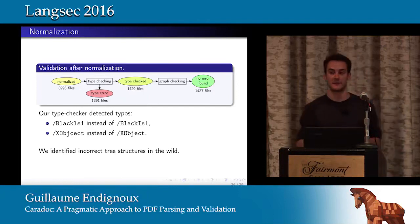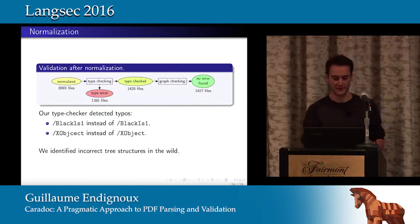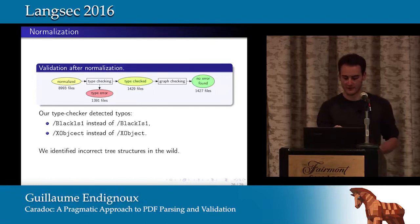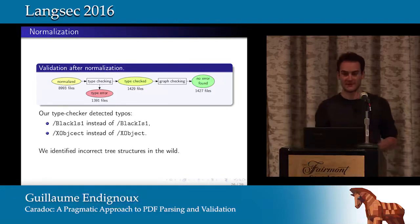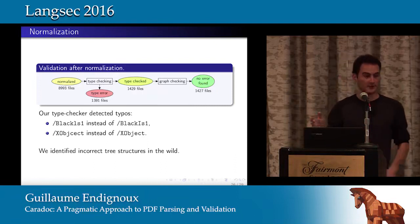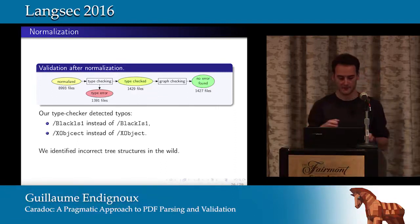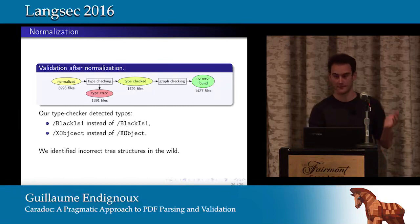Our type checker detected typos present in real-world files that were previously undetected. For example, one field supposed to be "BlackIs1" with an uppercase I was written as "BlackIs1" with a lowercase l by some PDF producers. No one noticed because parsers are allowed to silently correct files. There was also a typo where "X-Subject" had a "C" inserted. At the graph level, we also identified incorrect tree structures that had loops.